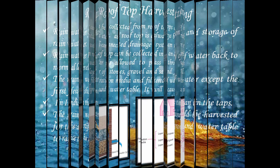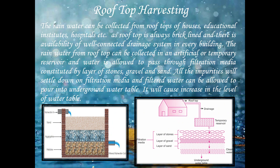We can do rainwater harvesting by adopting rooftop harvesting. What is rooftop harvesting? It is the collection of rainwater from the rooftop for the underground recharging of the water table. Rainwater can be easily collected from the rooftops of houses, educational institutes, and hospitals, as rooftops are always brick-lined. There is also availability of well-connected drainage systems in every building. The rainwater from the rooftop can be collected in a temporary or artificial reservoir, as seen in the figure.